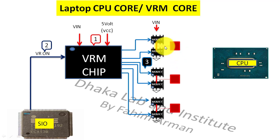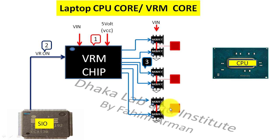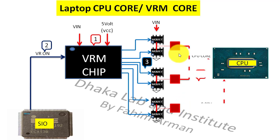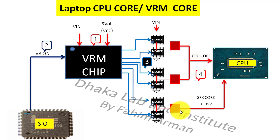There is a first phase and a second phase — these two phases are for CPU core voltage. This other phase is actually for the graphics core, and this is the graphics core coil. You will find the CPU core voltage here and the graphics core voltage there.